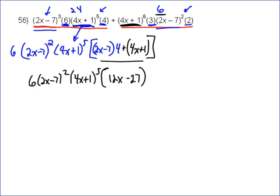So your answer is 6 times 2x minus 7 to the second, 4x plus 1 to the fifth, times 12x minus 27. And you always want to be careful because occasionally you can factor this more.